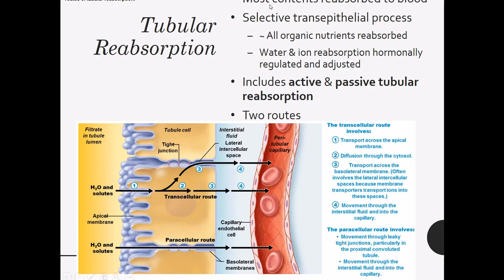It is mostly an active transport process, though there is some passive transport as well. Your kidneys produce about 180 liters of filtrate, but you actually only excrete about a liter and a half of urine — so just about everything is getting reabsorbed by the tubules, particularly the proximal convoluted tubule, because it has microvilli that create a lot of surface area for carrier proteins. It is a selective process: some stuff isn't reabsorbed, some stuff is.